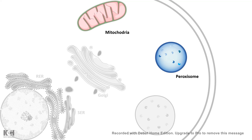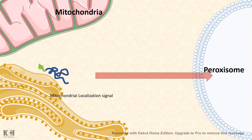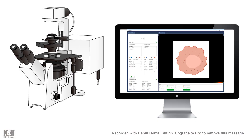To show that these targeting sequences are both necessary and sufficient, scientists performed signal-swapping experiments. If you take a protein normally containing a mitochondrial localization signal and replace it with a peroxisomal translocation signal, the protein is now delivered to the peroxisome instead of the mitochondria. This demonstrates that these signals are the key determinants of where a protein is delivered.